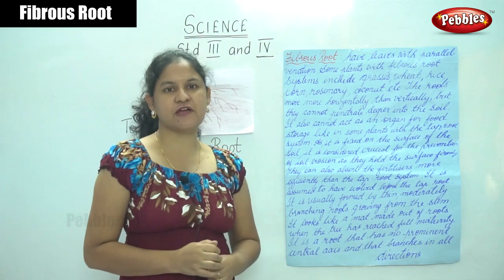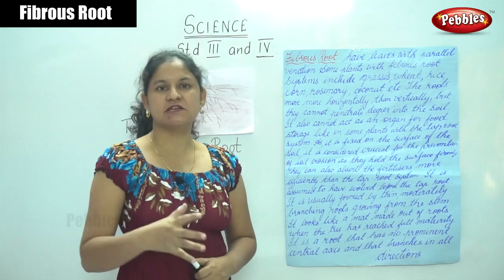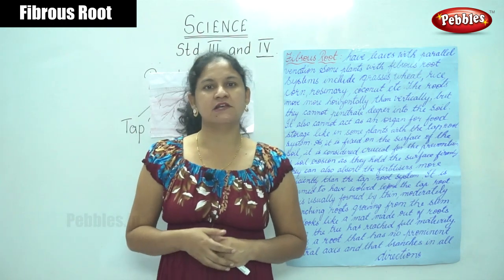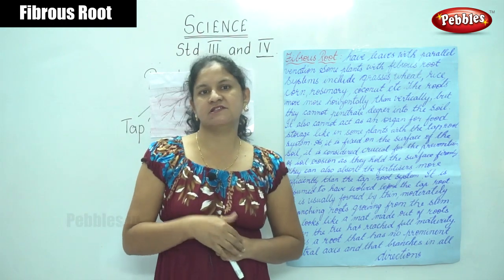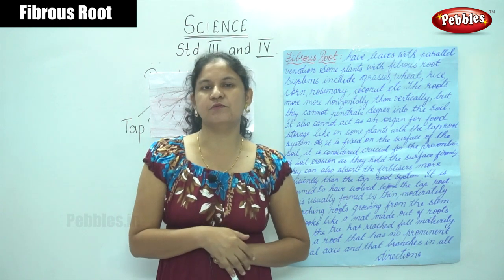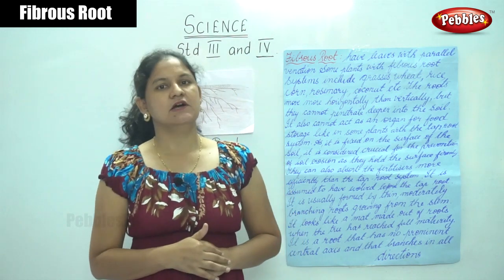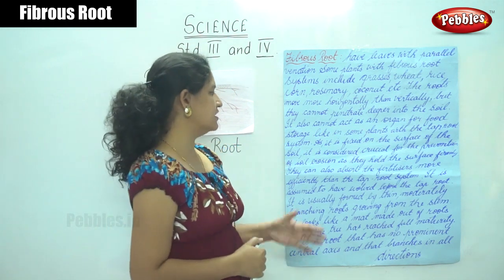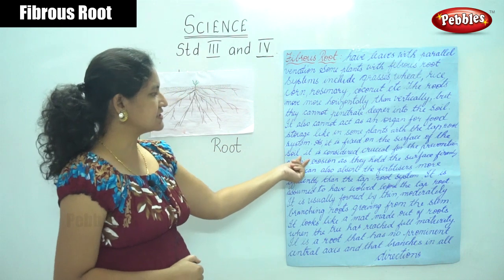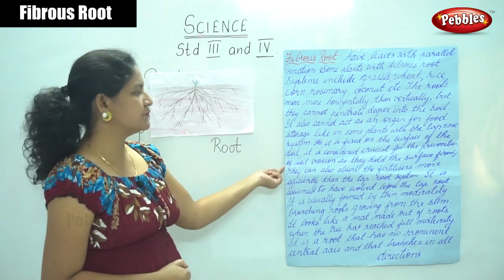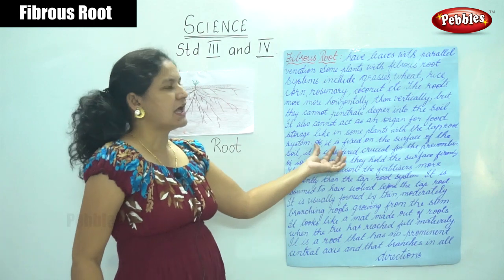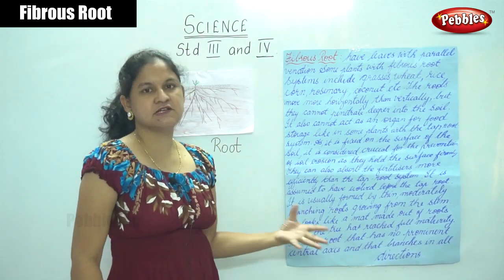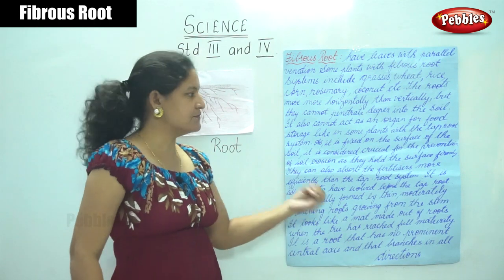A fibrous root cannot act as a food storage like in some plants with the tap root system. Since it is fixed on the surface of the soil, a fibrous root plant can be uprooted very easily compared to a tap root, because the tap root penetrates very deep into the ground in search of water. Since a fibrous root remains on the surface, it is considered crucial for the prevention of soil erosion.